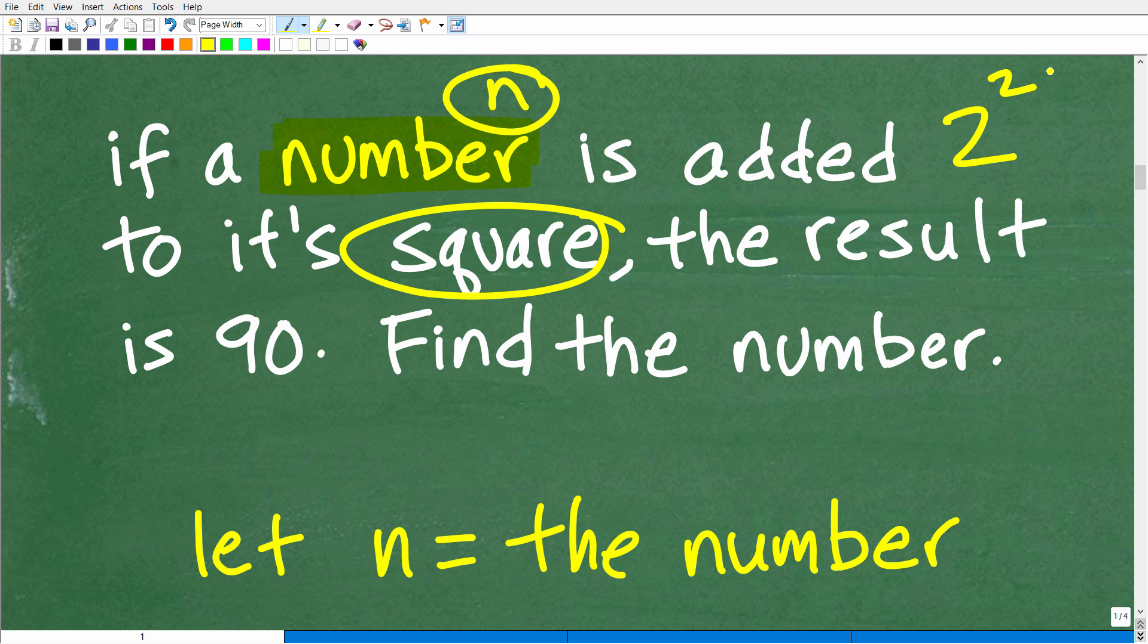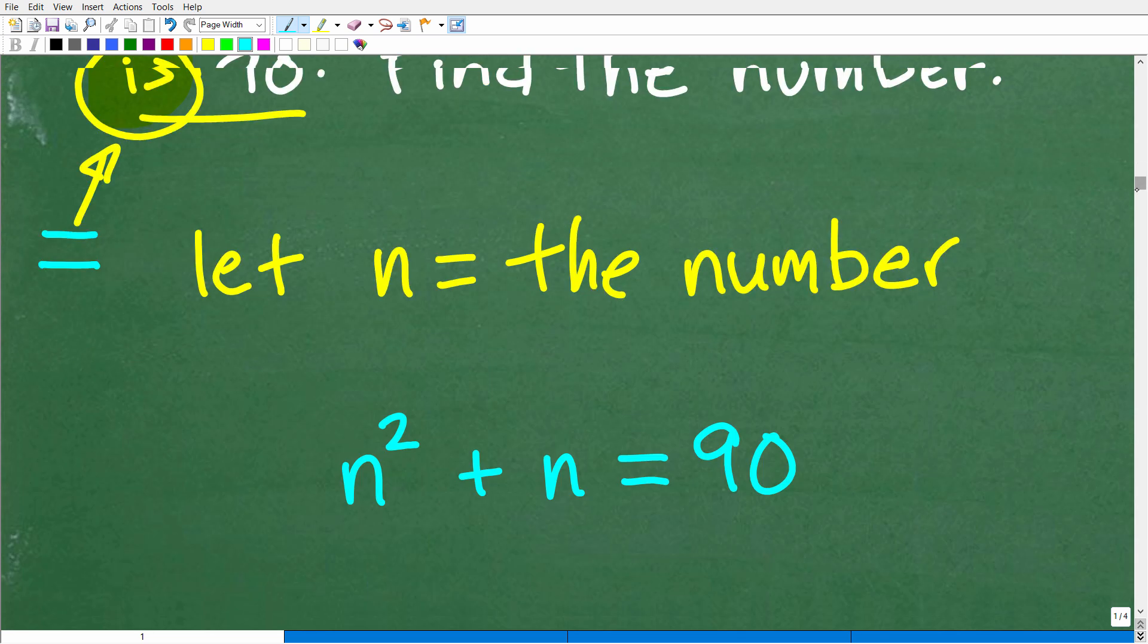So if a number N is added to its square, the result is 90. This word 'is' in algebra or mathematics is always, always the equal sign. So we can build some sort of equation here. Let's go ahead and see the full thing.